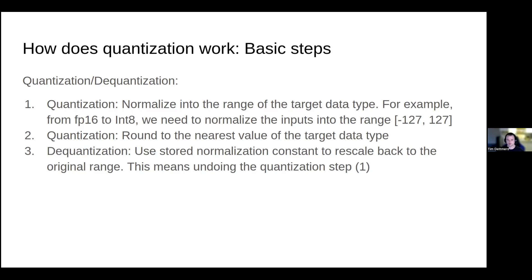If you have a data type like a 16-bit floating point and you want to convert it to int8, you first need to normalize it into the range of that data type — in this case minus 127 to 127. You do that by dividing by the absolute maximum value of the input vector. With that, you get into the range of minus 1 to 1, and then you just scale by the maximum value, in this case 127, to reach the interval minus 127 to 127.